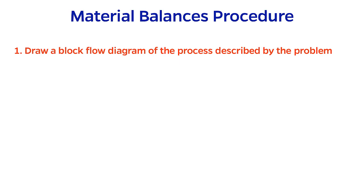Material Balances Procedure. Step 1. Draw a block flow diagram of the process described. For this part, use boxes to represent process arrows and arrows to represent streams, as I covered in Episode 2 of this series.